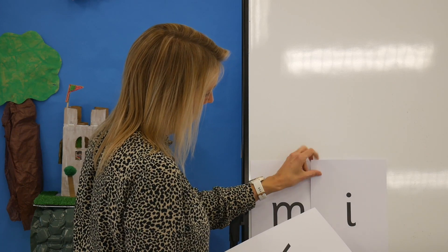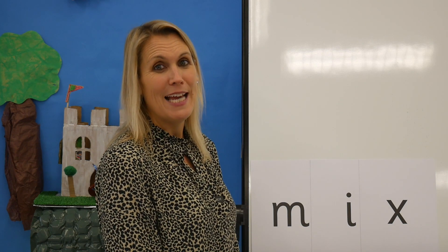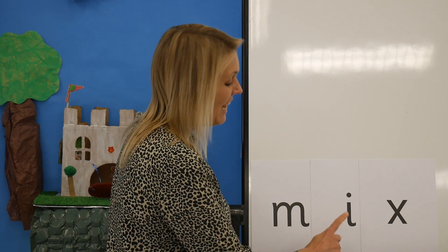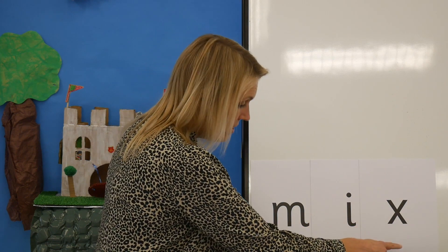Incredible. We are amazing today, children. Now let's see if you can blend some words without my help — I bet you can. Try this one. Okay, say the sounds as I point, then blend to read the word. I, X — mix. Now I won't help you at all. Say the sounds as I point, then blend to read the word. Okay, let's read the word together now: I, X — mix. Mix. Well done.